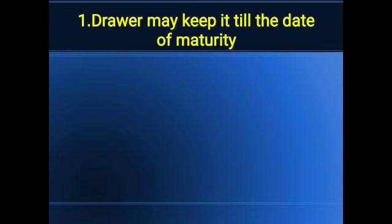Method one is bills remain with the drawer till the date of maturity. When the drawer writes the bill on the drawee — the drawer refers to the supplier who writes the bill on the customer — the bill stays in the hand of the drawer. He has not given it to any other person, to the bank, or to the endorsee. That's why it is called the drawer keeps the bill till the date of maturity, meaning the drawer will receive the amount of the bill from the drawee.